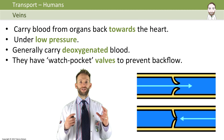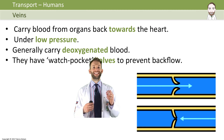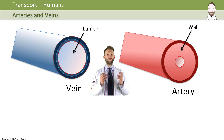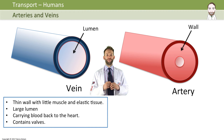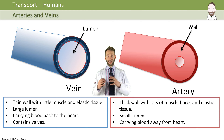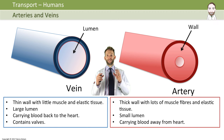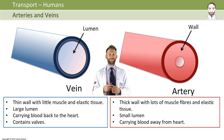Comparing veins and arteries: veins tend to have thin walls with not very much muscle or elastic tissue and they have a very large lumen. They carry blood back to the heart and they contain valves. Arteries, on the other hand, have a much thicker wall, full of muscle and elastic fiber, with a small lumen to maintain a high pressure, and they carry blood away from the heart.